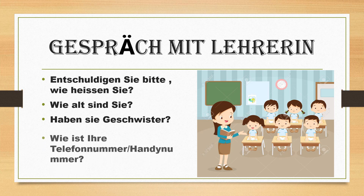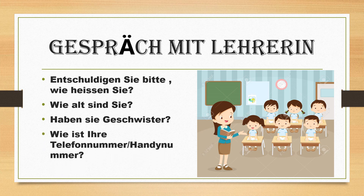Then a naughty student asks: 'Wie ist hier Ihre Telefonnummer oder Handynummer?' — What is your telephone number or mobile number? Let's see the questions once again: Entschuldigung, wie heißen Sie? Wie alt sind Sie? Haben Sie Geschwister? Wie ist Ihre Telefonnummer oder Handynummer? There is homework for you — tell me the answers to these four questions in the comment box.